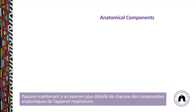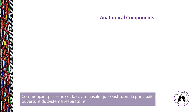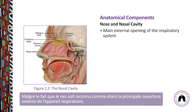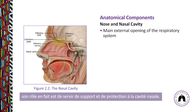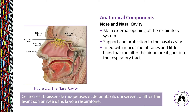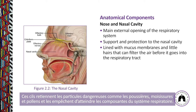Let's look in more detail at each anatomical component of the respiratory system, starting with the nose and nasal cavity. The nose and nasal cavity constitute the main external opening of the respiratory system. The nose provides support and protection to the nasal cavity, which is lined with mucous membranes and little hairs that filter the air before it enters the respiratory tract. These hairs trap harmful particles such as dust, molds, and pollens, preventing them from reaching internal components of the respiratory system.